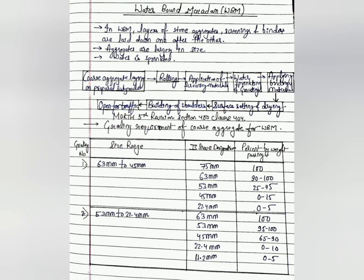Water Bond Macadam (WBM) involves layers of stone aggregate, screenings, and binders laid down one after the other. Aggregates are larger in size, and water is sprinkled — not pre-mixed. The WBM process involves: coarse aggregate laying on prepared subgrade, rolling, application of screening material, water sprinkling and grouting, applying binder material, surface setting and drying, building of shoulders, then opening to traffic.